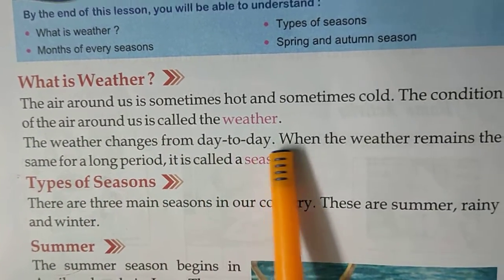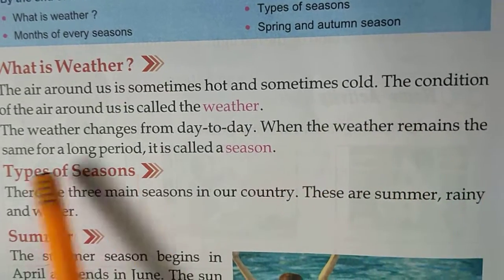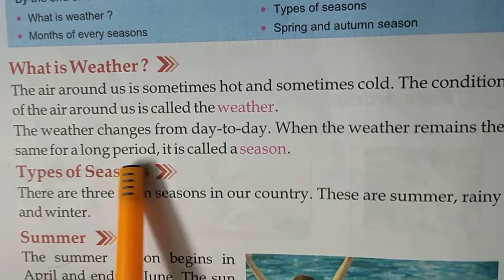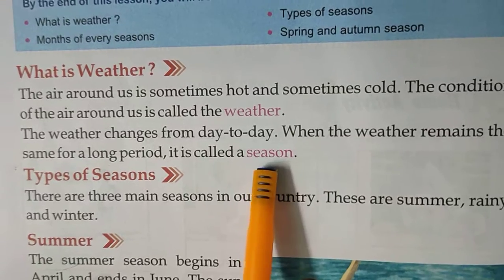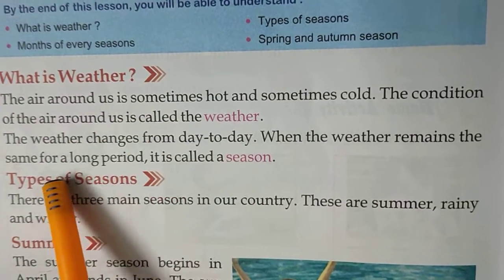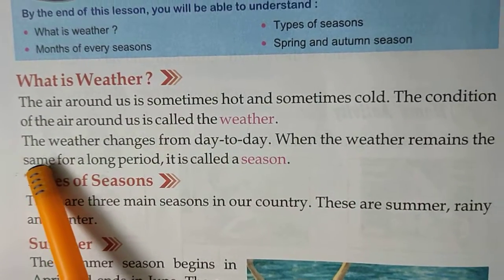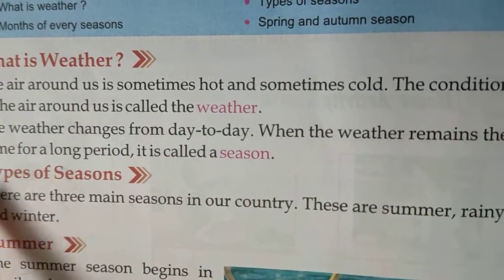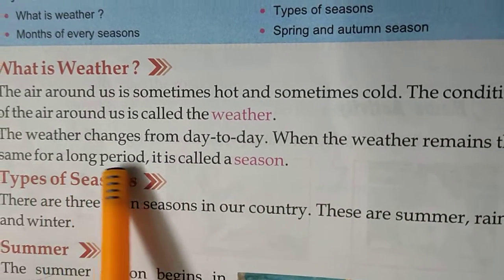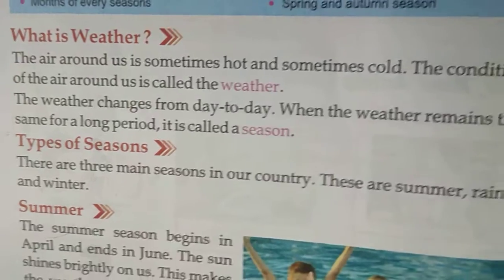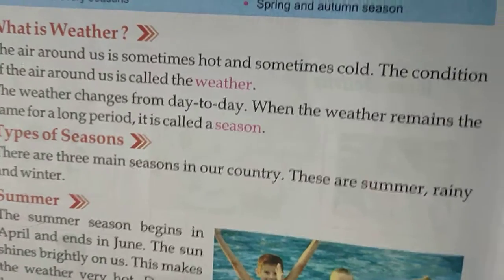The weather changes from day to day. When the weather remains the same for a long period, it is called a season. Weather means the everyday condition of the air. Season means a long period of similar weather — for example, summer, winter, etc.